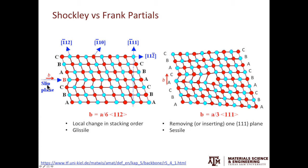In contrast, for Frank partials, they are introduced when you either remove one 111 plane or insert one 111 plane. The Burgers vector does not lie on the slip plane. Therefore, Frank partials are sessile or immobile. They can only move through a process called CLIMB, which we'll discuss in one of the future videos.